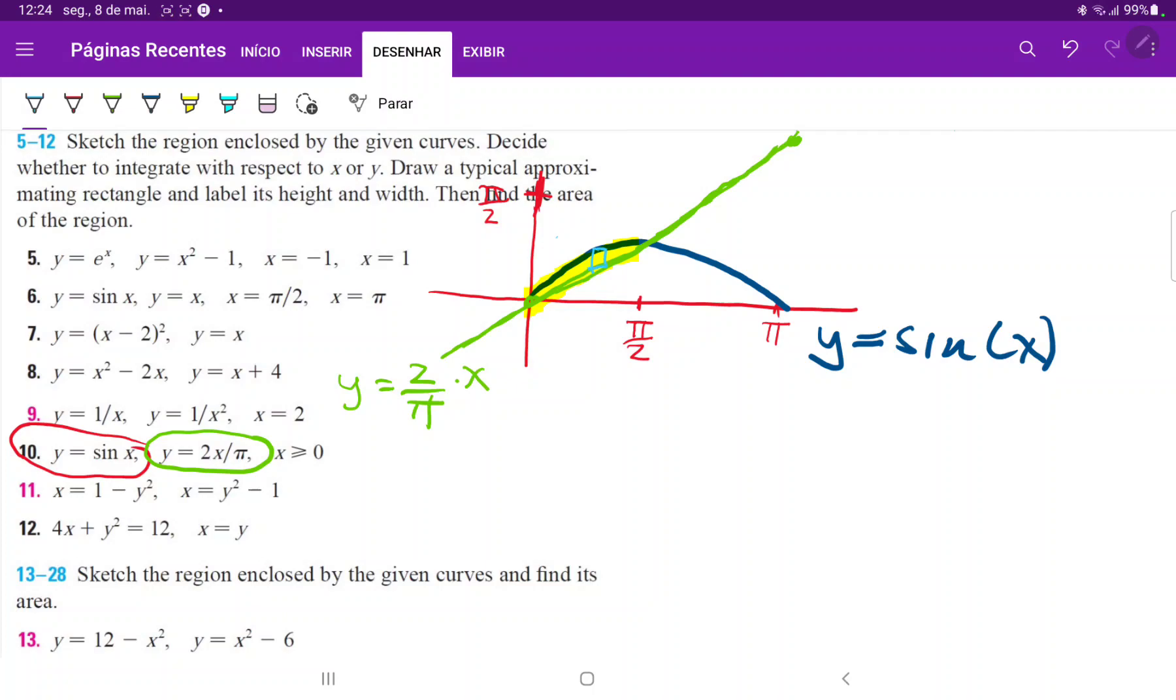So the rectangle is given by the height times the width. And the height is just the upper function minus the lower function, which the upper function is consistently sine of x, and the lower function is consistently 2 over pi times x. So we can use these vertical rectangles. So the height is just sine of x minus 2 over pi x, and the width is just dx, for a little section of our x-axis.